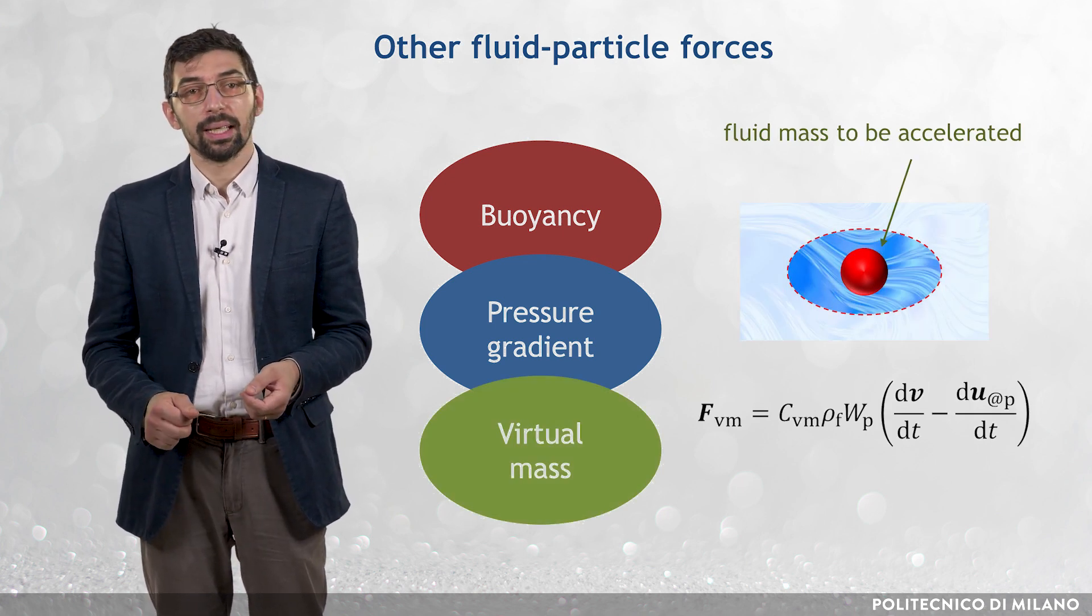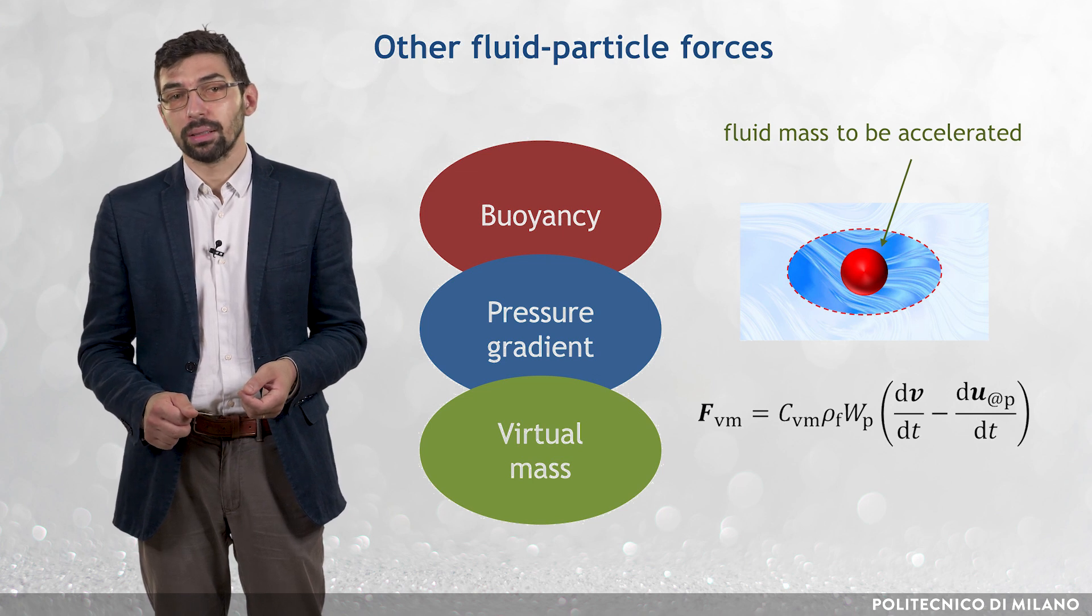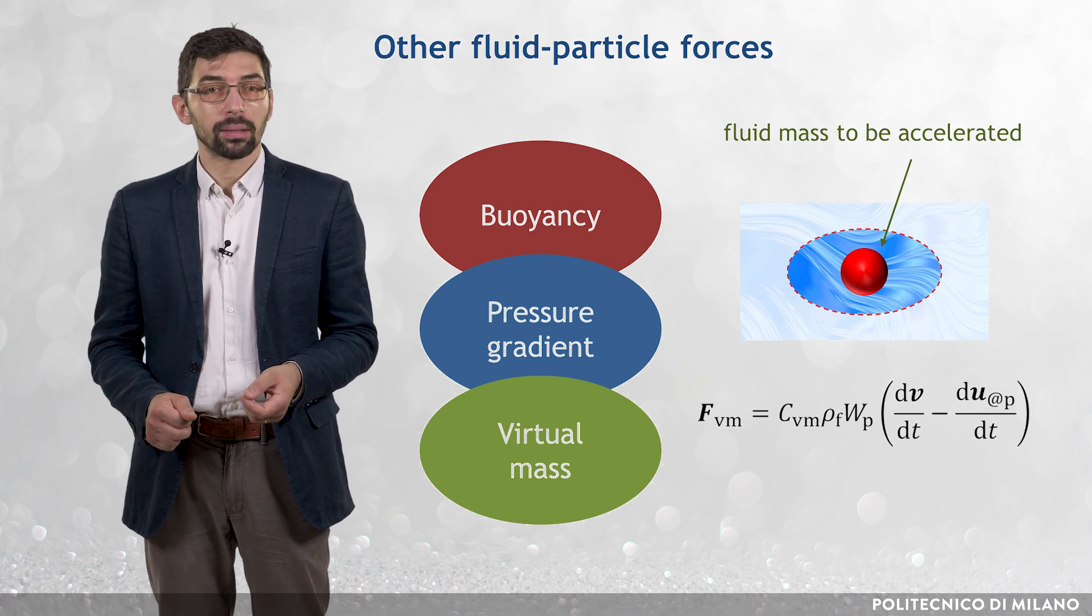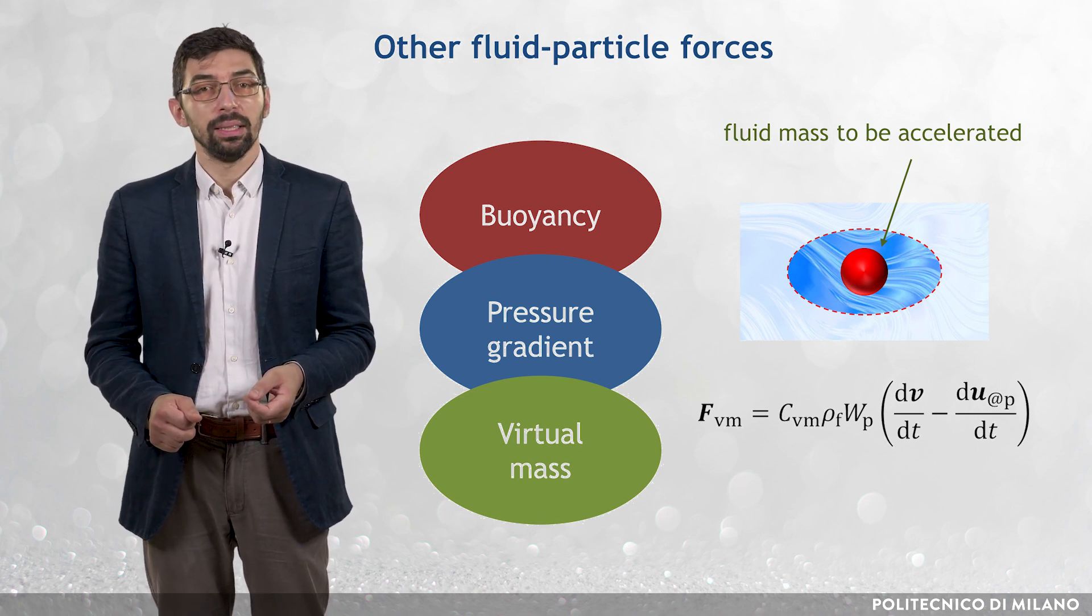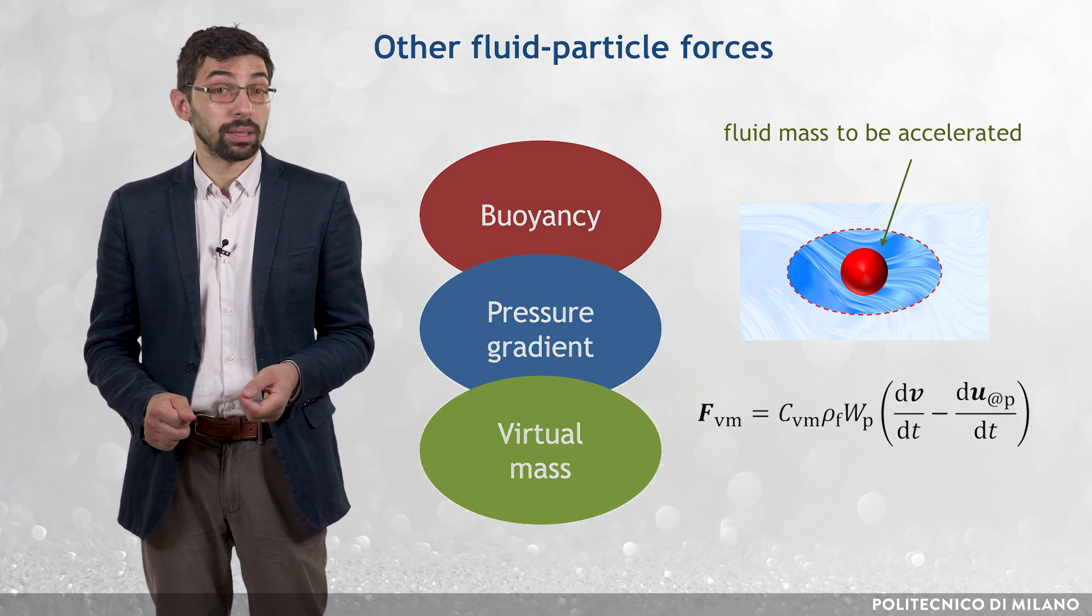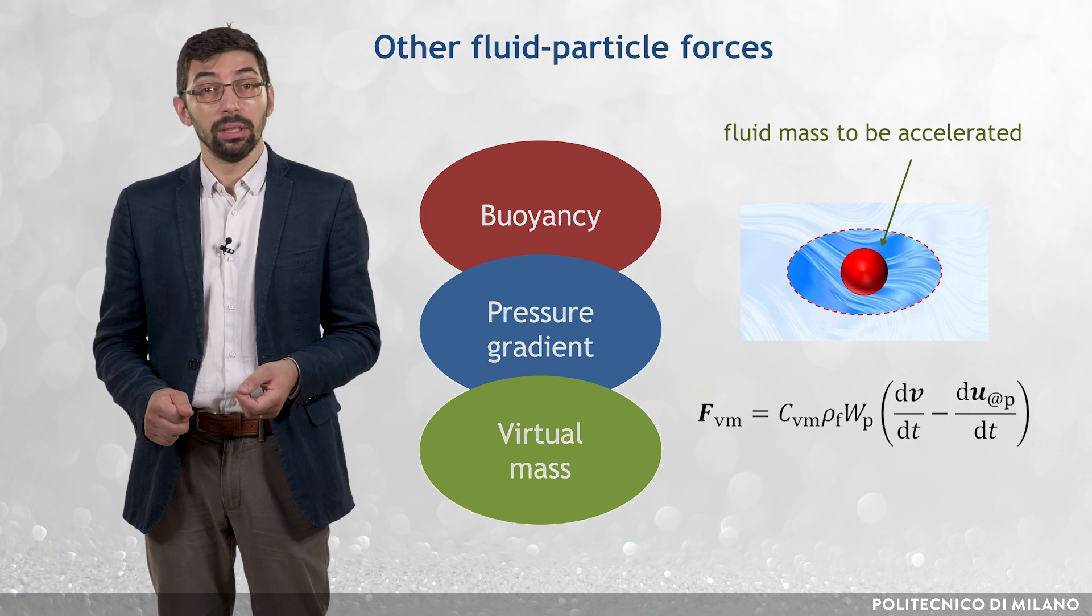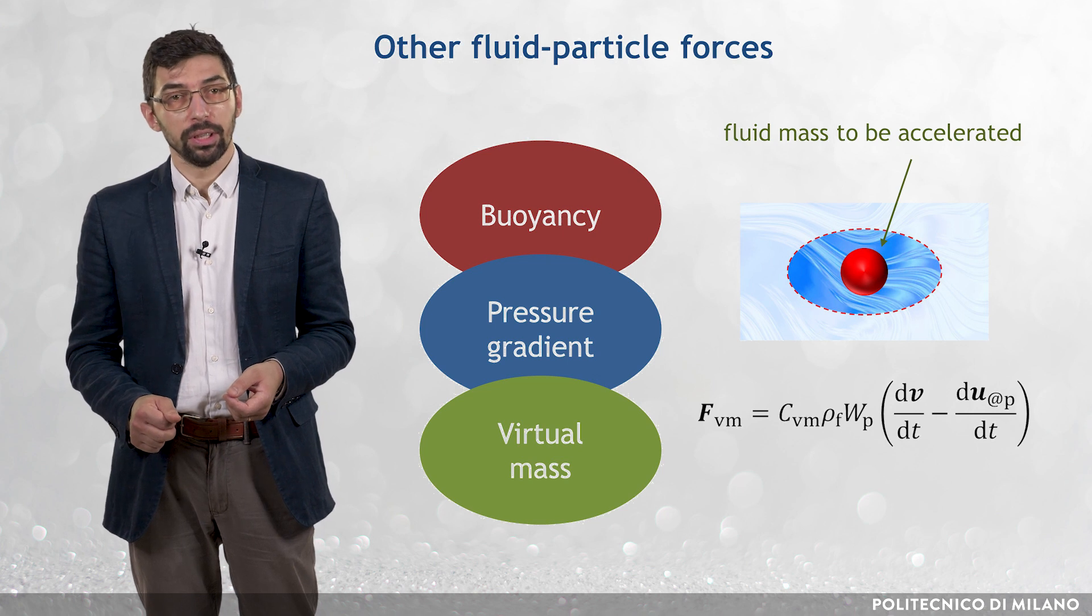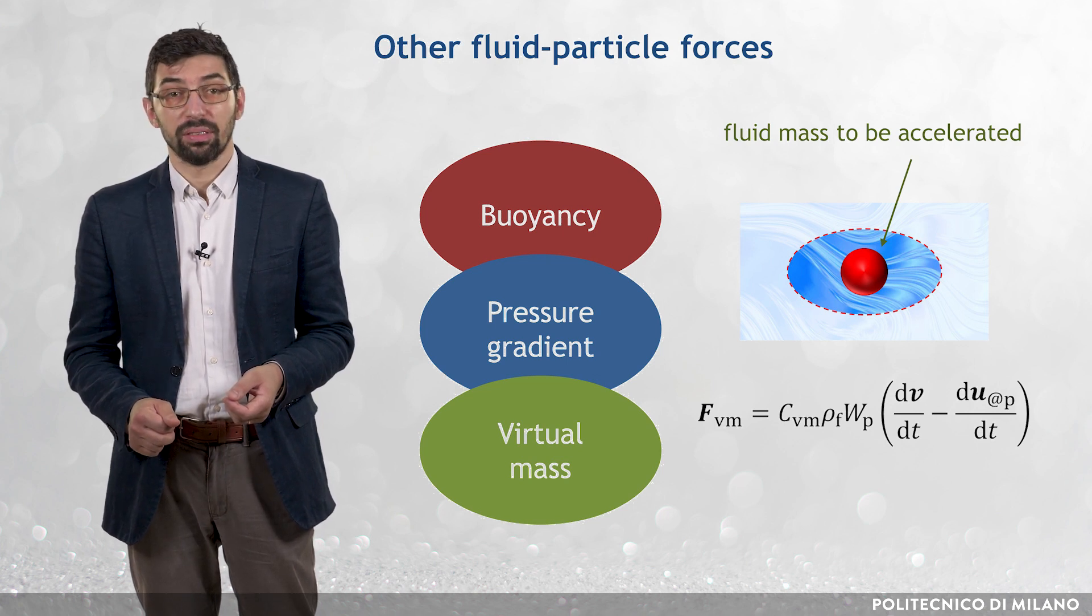The virtual mass force Fvm, whose basic idea is that in order to accelerate a particle, also the fluid surrounding the particle has to be accelerated. The expression for Fvm is Cvm times ρf times Wp times (dv/dt minus dU at p over dt), where Cvm is a virtual mass coefficient, usually taken as 0.5.